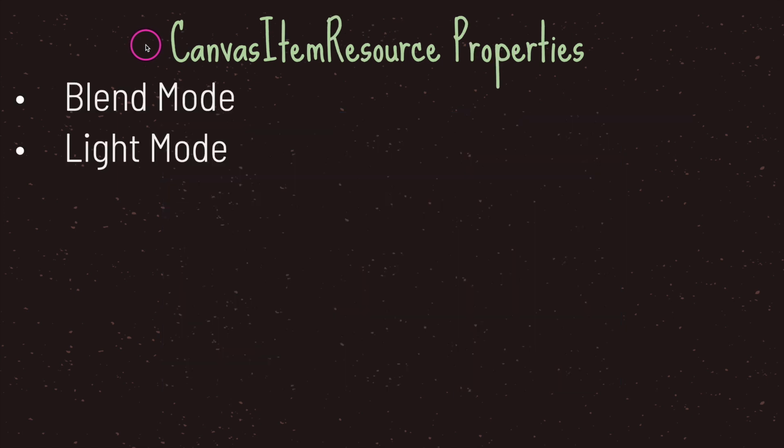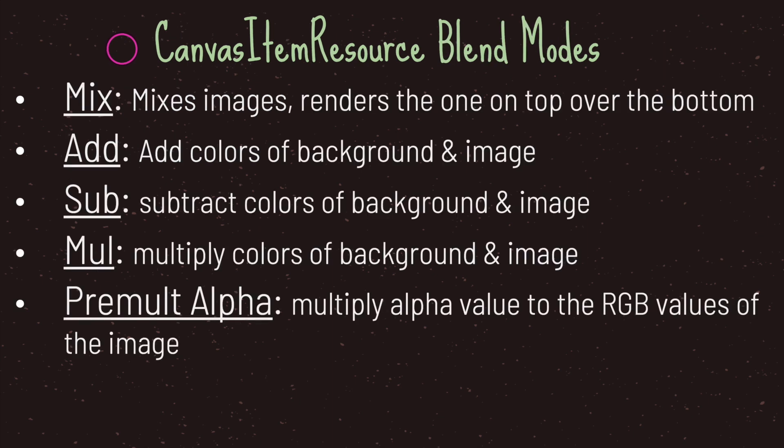Now the canvas item material resource class, once attached to the canvas item class, has two property values that are important for now. The first is the blend mode and the second is the light mode. Both these properties take in enum values. Let's go ahead and take a look at blend modes.